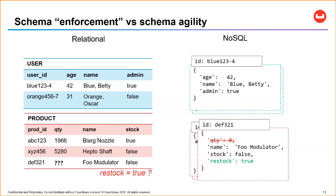On the flip side, if I want to add a 'restock' field for certain products, in relational I'd need to add a column with a value for every row, filling up with nulls or negative ones for rows where it makes no sense. In a document database, I can add a restock field to a single document in the collection and it has no effect on the other documents. This is just a small taste of the schema flexibility afforded by a document database.